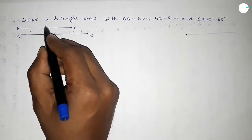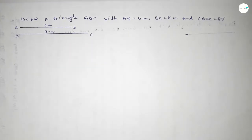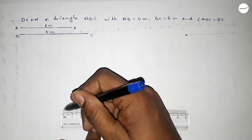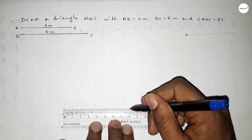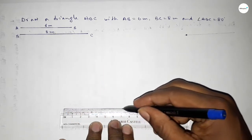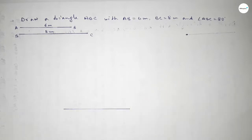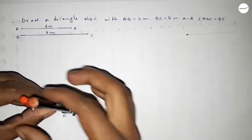This line is BC line, so this is 6 centimeter and BC equal to 8 centimeter. Now we have to draw a line of length 8 centimeter. Taking here point B and here C. Now we have to draw an 80 degree angle on the point B, so putting the compass on the point B.